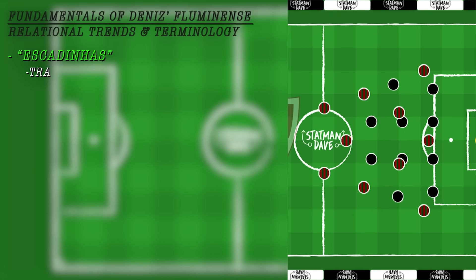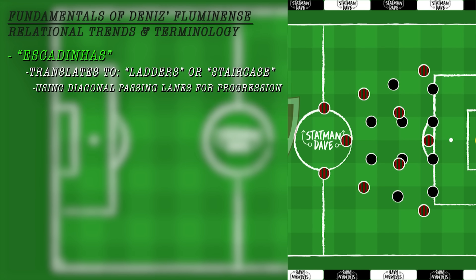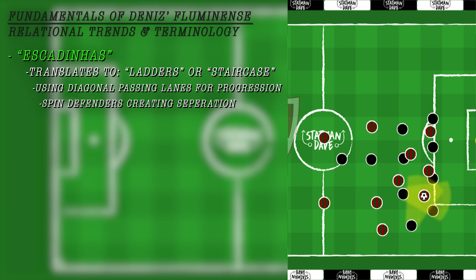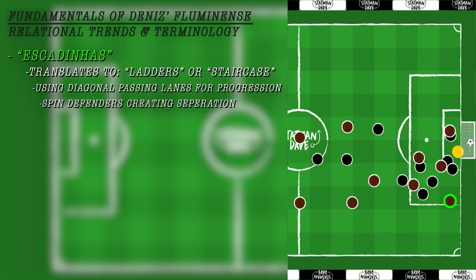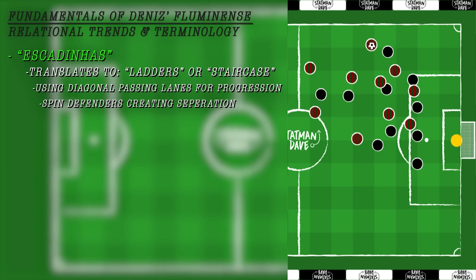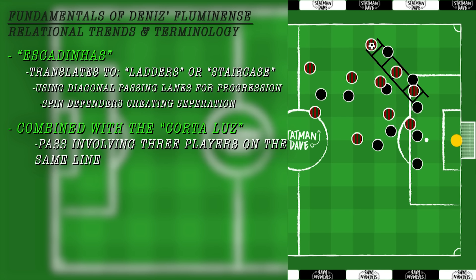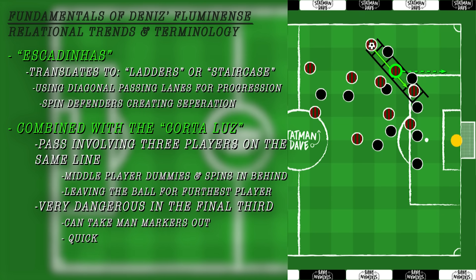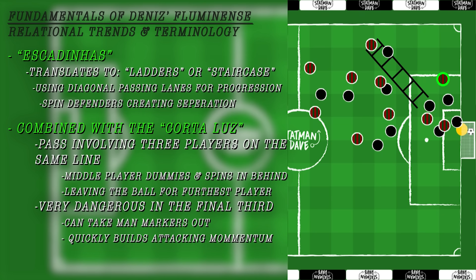Another common tool in Fluminense's arsenal is the escadinhas, meaning the staircase or ladder — a methodology of progressing the ball using diagonal lines. These ladders are common in progressive football because a diagonal line spins the defender as the ball breaks their line, and also puts the passer on the blind side of his marker, creating dangerous opportunities for pass-and-move play. The close proximity of players in Fluminense's relationist approach means multiple players can be on the same ladder. This opens the door for another common pattern: the corta-luz, a pass-and-move scenario involving a line of three players where the middle player shapes to receive but dummies to let the ball roll to the furthest player while spinning in behind. This can cause extreme chaos in the final third and is a common tool used to unsettle a backline and create a chance to score.